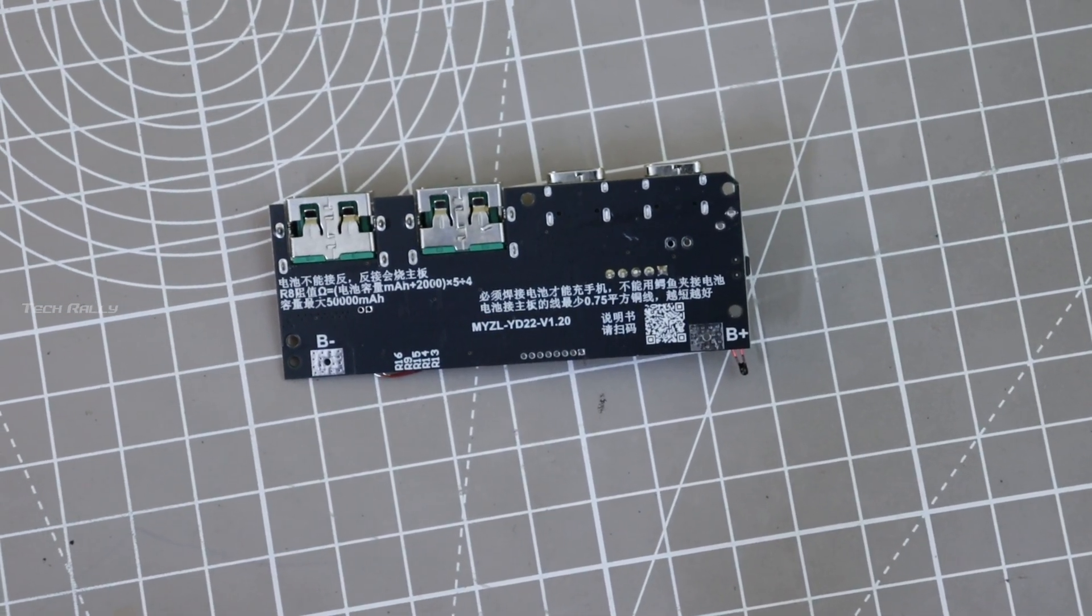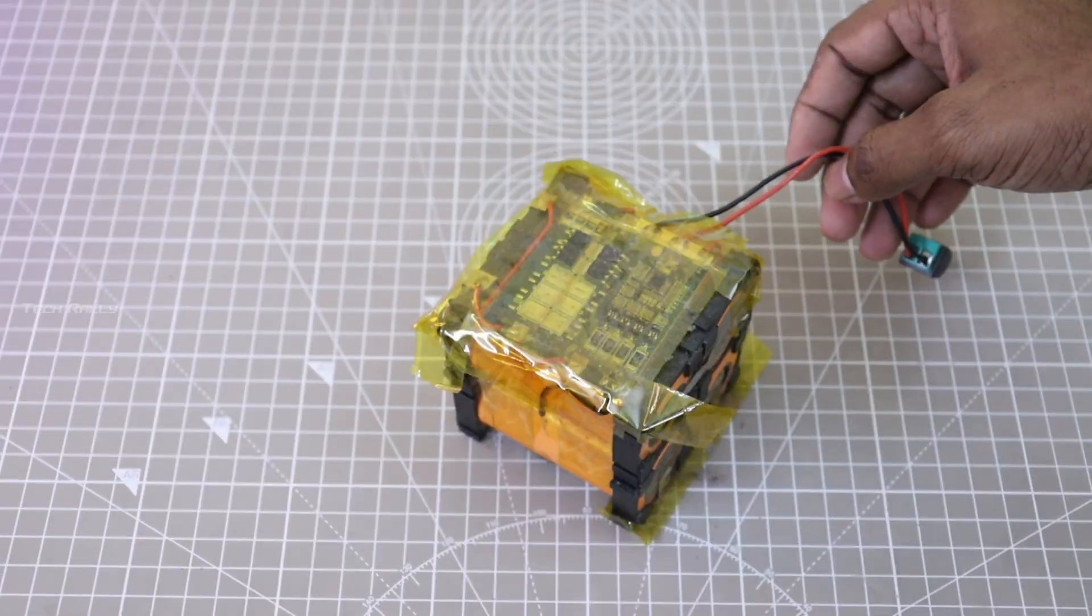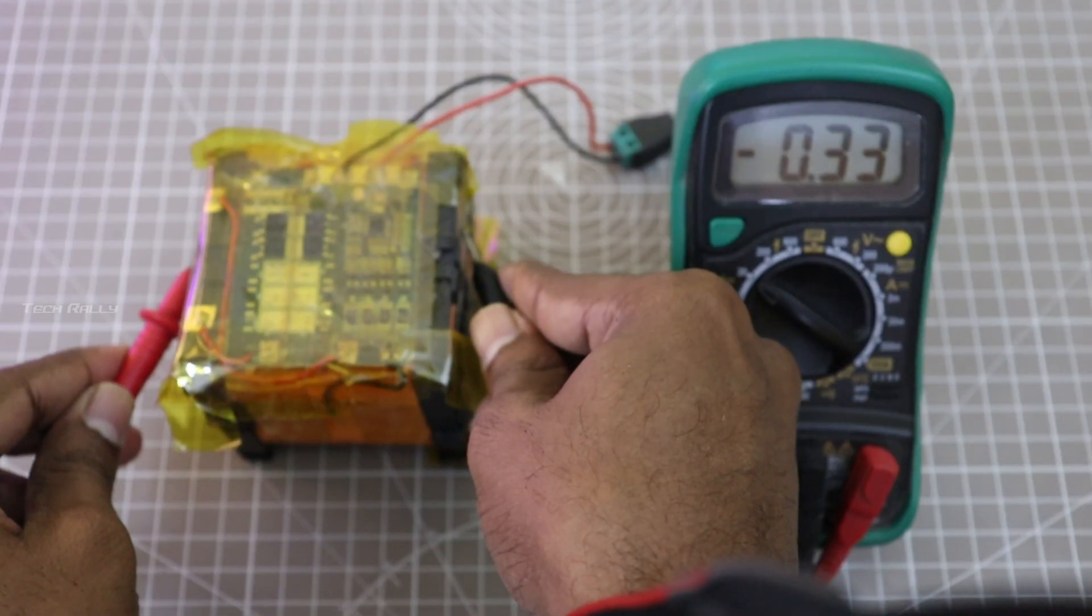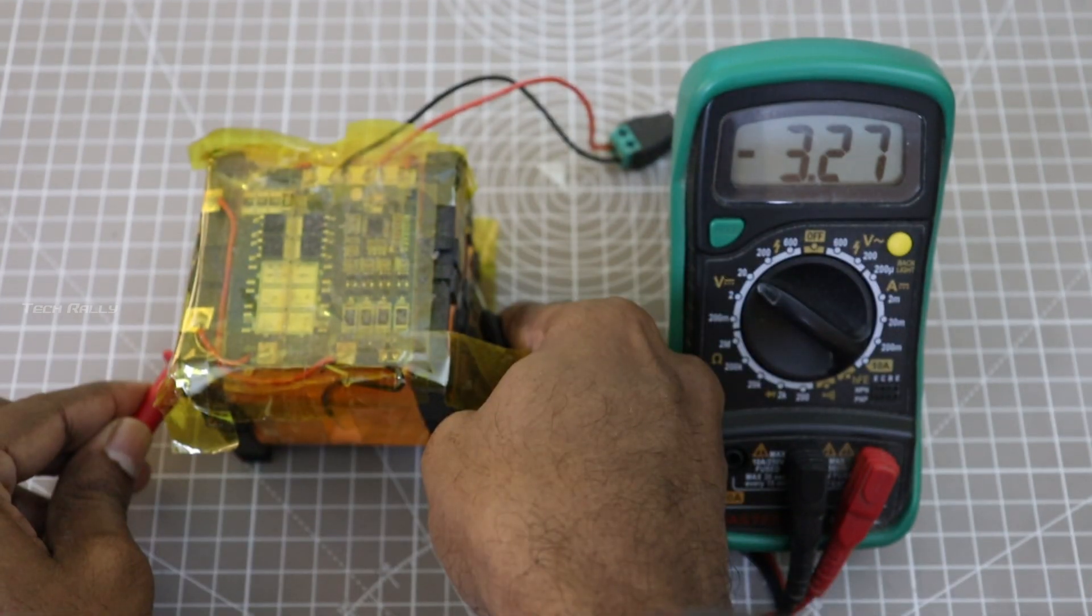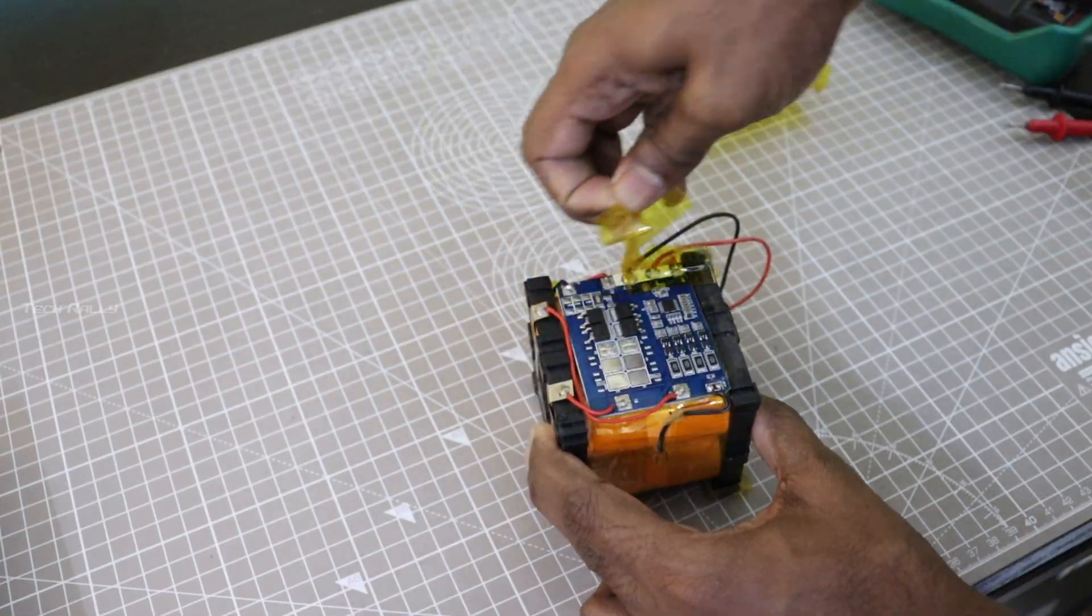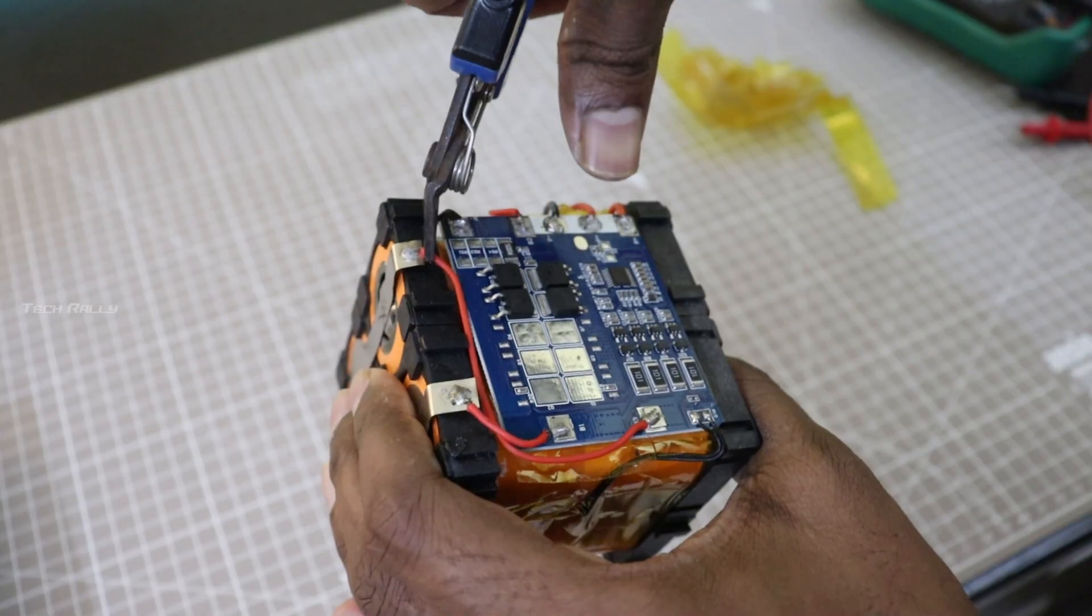For battery I am using an old battery pack I made. You can find the link to that video in the description. One of the batteries has failed and only has 0.34 volts while other three are fine. Now let's disconnect this battery from the BMS board.